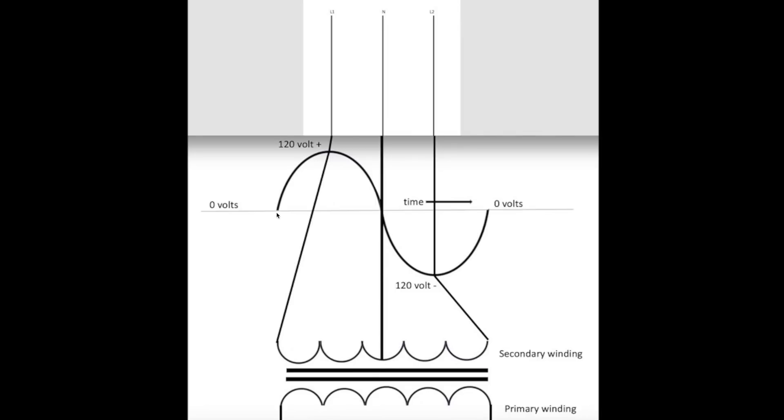Now I've laid this over a sine wave. A sine wave is nothing special. It's just the way alternating current builds up its power, positive, as here, 120 volts positive, down to zero, and then down to 120 volts negative.